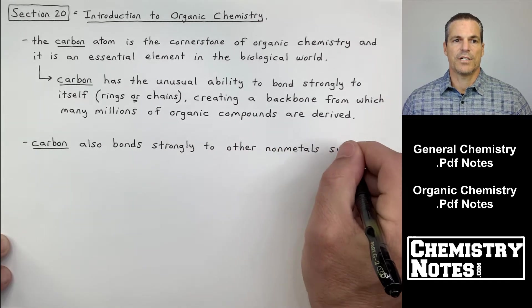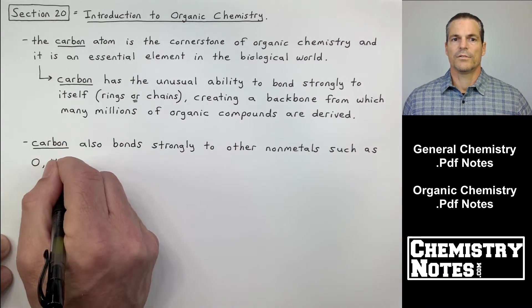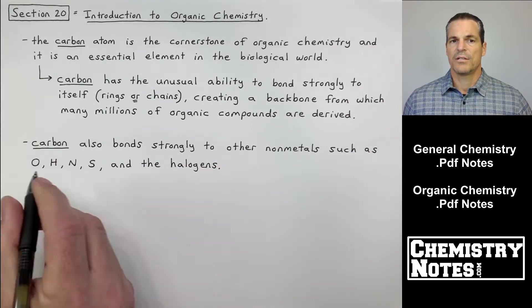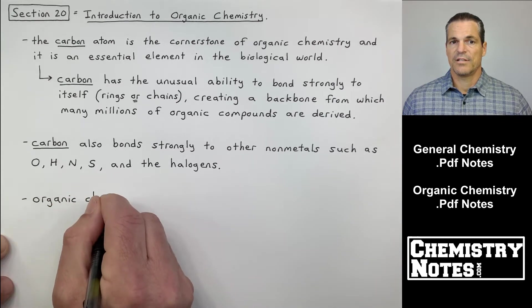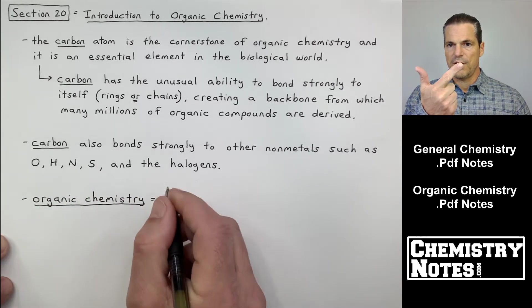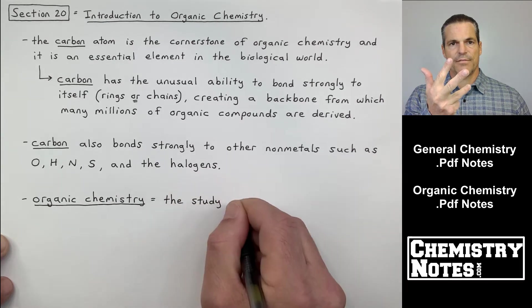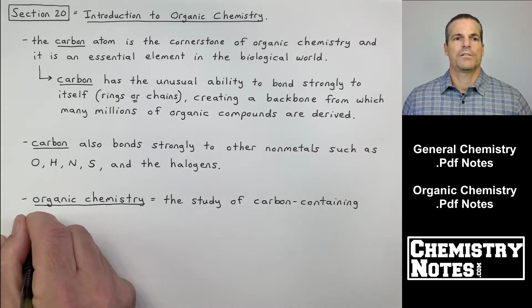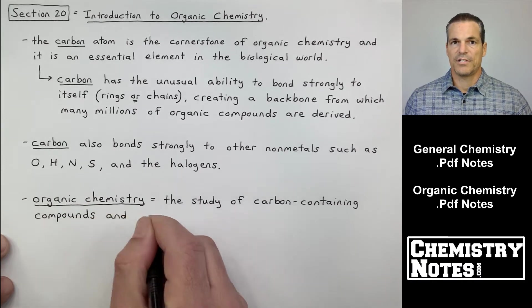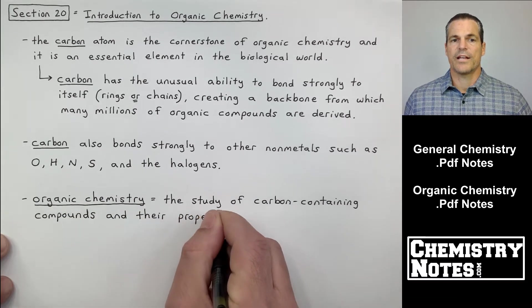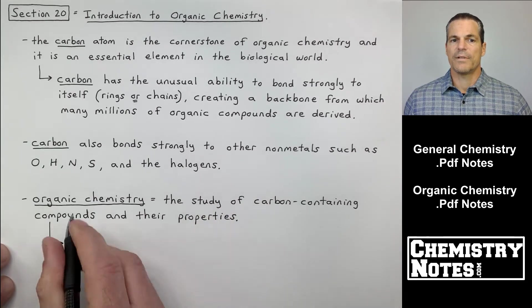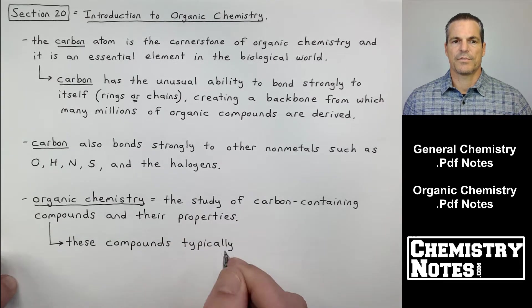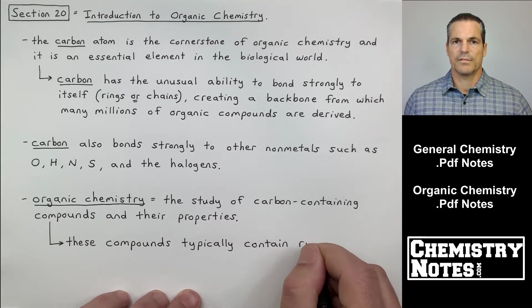Now it then goes on to say carbon also bonds strongly to other nonmetals such as oxygen, hydrogen, nitrogen, sulfur, and the halogens. And the halogens of course are Cl, Br, I, and F - fluorine, chlorine, bromine, and iodine. So the third bullet point then is kind of my definition of organic chemistry for you. It says organic chemistry is the study of carbon containing compounds and their properties. Organic chemistry, the study of carbon containing compounds and their properties.